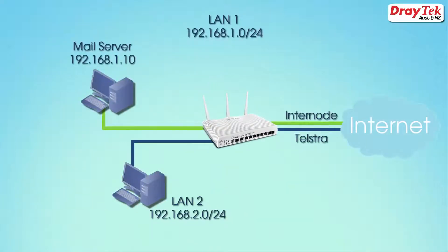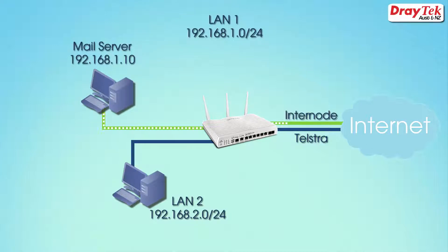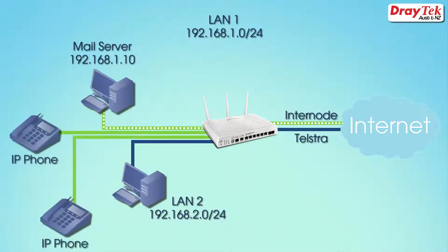For example, SMTP mail may only be accepted by the ISP that provided the service, which is Internode in our example. The data flow to the internet shown in green goes from the mail server to the internet through WAN1, which is the Internode connection.